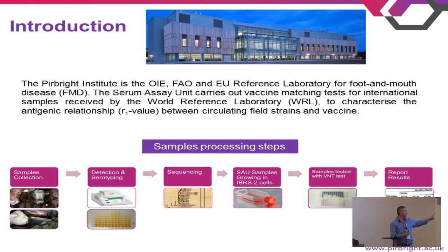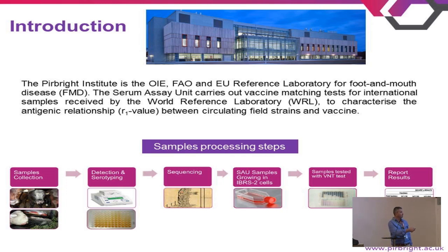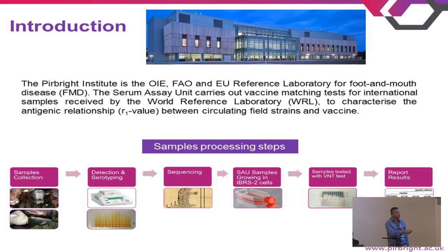Here is a diagram of the process that samples go through from sample collection in the country of origin as suspected cases. The first step at the reference lab is detection and serotyping, then sequencing. From the sequencing tree we pick the samples to be tested and carry out the vaccine matching test. The first step is to grow the virus a couple of times on BHK cells, then apply the virus neutralization test.